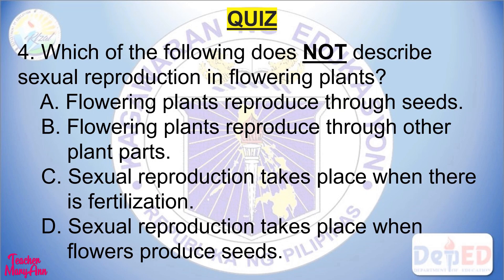Number three: how do avocado, eggplant, squash, and ampalaya reproduce? A) sexually, B) asexually, C) both sexually and asexually, D) neither A or B. Number four: which of the following does not describe sexual reproduction in flowering plants? A) flowering plants reproduce through seeds, B) flowering plants reproduce through other plant parts, C) sexual reproduction takes place when there is fertilization, D) sexual reproduction takes place when flowers produce seeds.